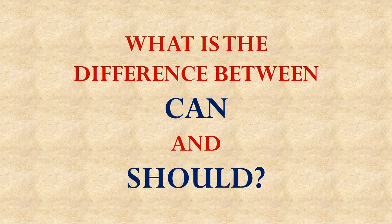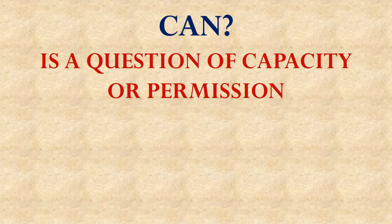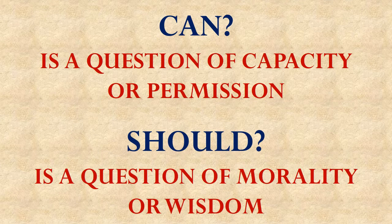Let's begin with what may seem like a simple question, but as it turns out, maybe it isn't. What is the difference between can and should? Can is a question of capacity or permission — do you have the ability to do a thing. Should is a question about morality or wisdom. If we ask whether you should do something, we're asking whether it's a good idea, not whether you're capable of doing it.